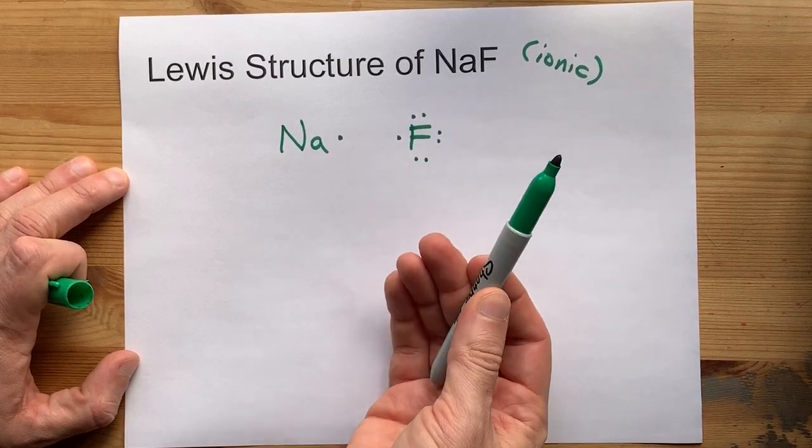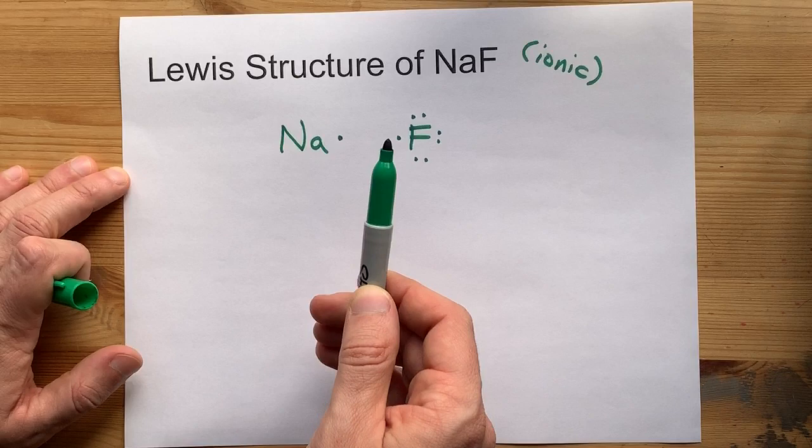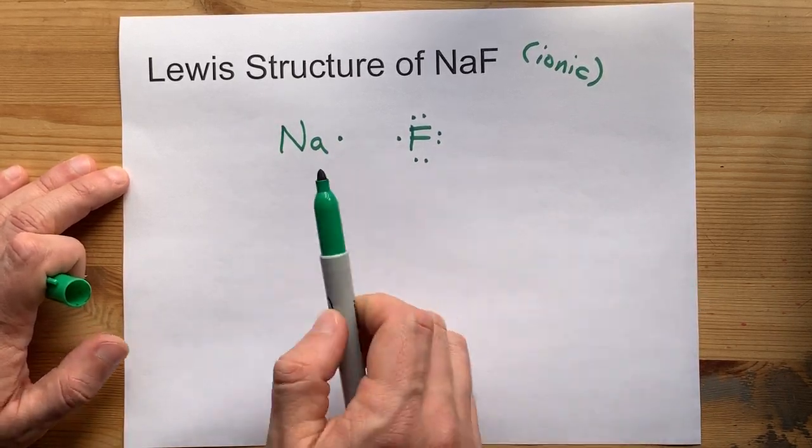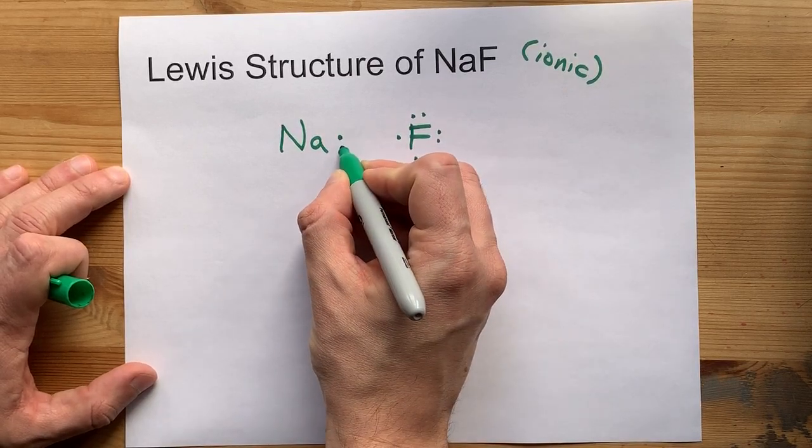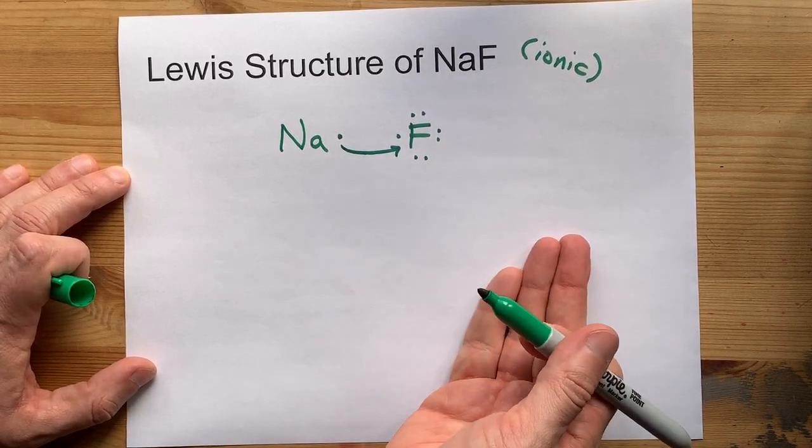Fluorine wants eight electrons to have a full octet. Sodium wants to give away all its electrons because that's what metals do. So if sodium can give away its one electron to fluorine and give fluorine a full octet, then everyone's happy.